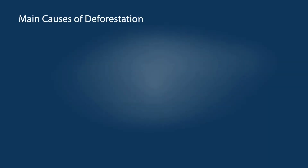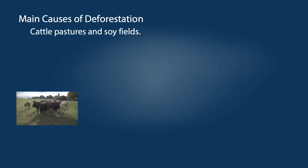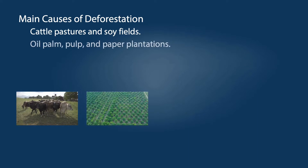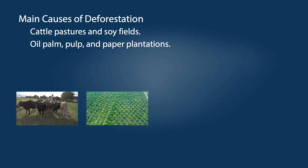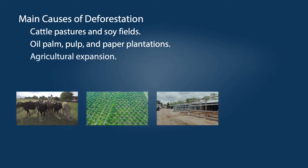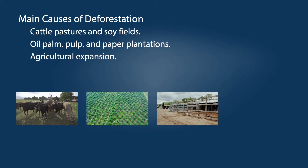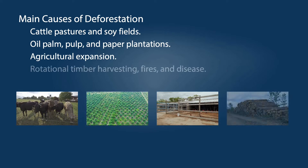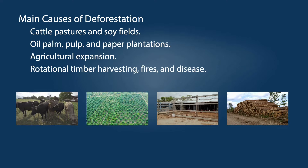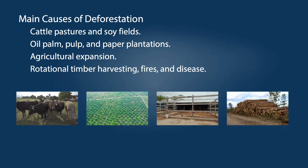As reported in the journal Science, the main causes of deforestation are different in different parts of the world. In Latin America, forests are being turned into cattle pasture and soy fields. In Asia, forests are cleared to make way for oil palm and pulp and paper plantations. In Africa, forests are being displaced by expansion of smallholder agriculture. Outside the tropics, there's rotational timber harvesting, as well as fires and disease.